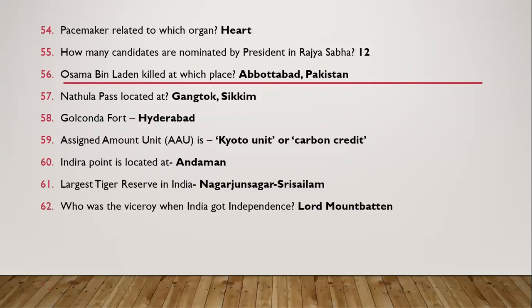Question 62: Who was the Viceroy when India got independence? Lord Mountbatten. Question 63: Jama Masjid — it is in Delhi.